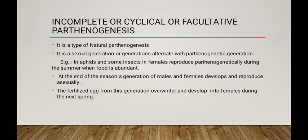We can see an example here: in aphids and some insects, females reproduce by pathogenesis during the summer when food is abundant. At the end of the season, a generation of males and females develops and reproduces asexually. The fertilized egg from this generation overwinters and develops into females during the next spring.